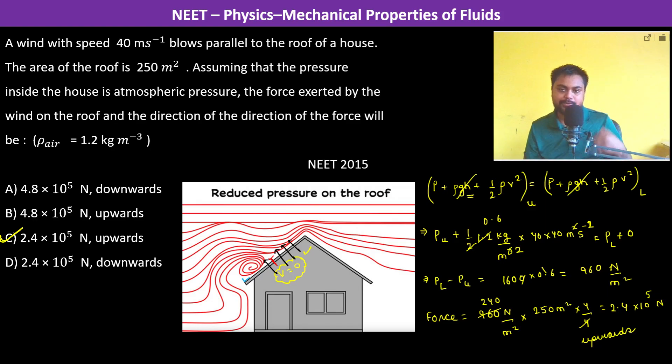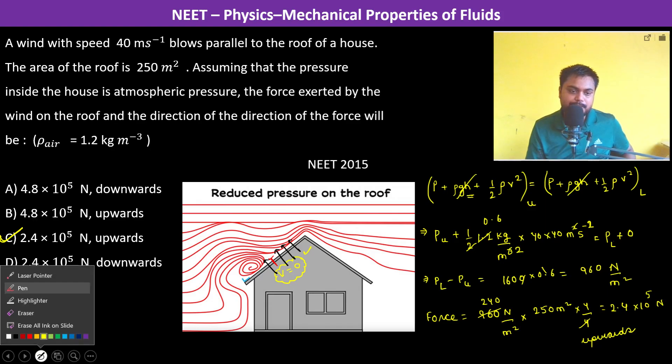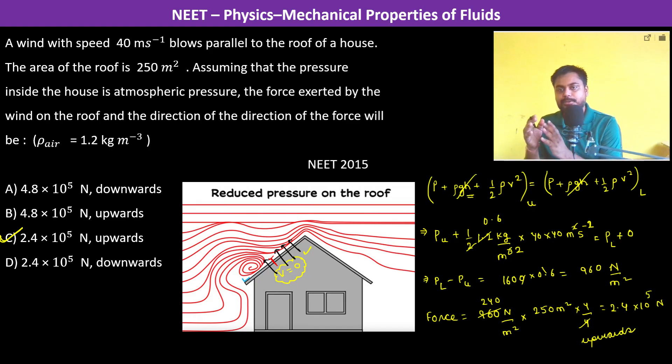So I will just explain it again. If we see, what is happening is we have to apply Bernoulli's theorem. So this is Bernoulli's theorem: P plus rho g h plus half rho v squared, this is constant. Now the pressure, so here it is P upper, here it is P lower. Now of course when we apply the formula, we are able to see that this height factor we are kind of neglecting because the height is almost the same.